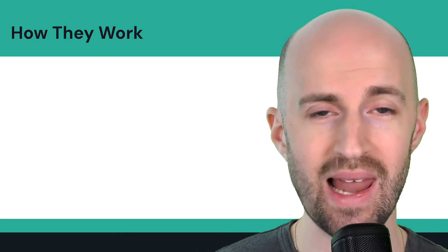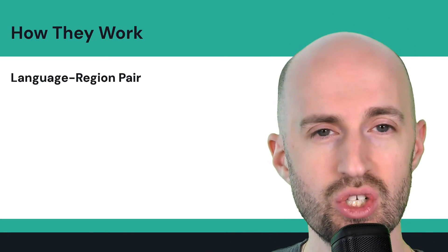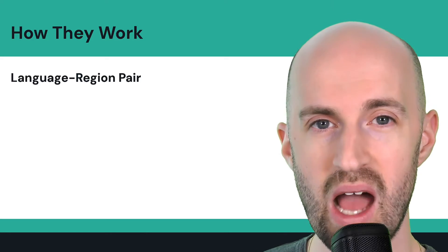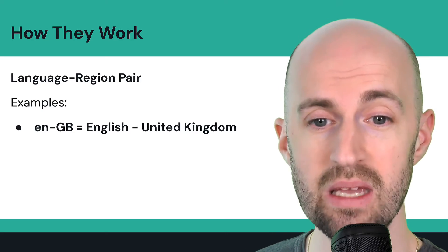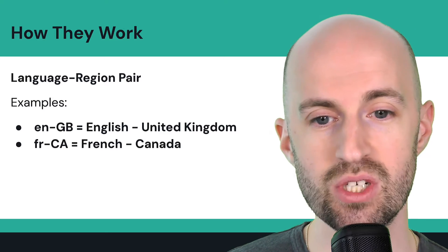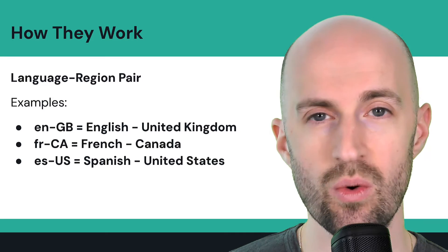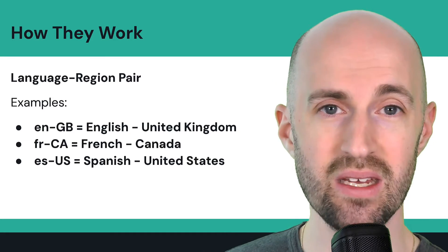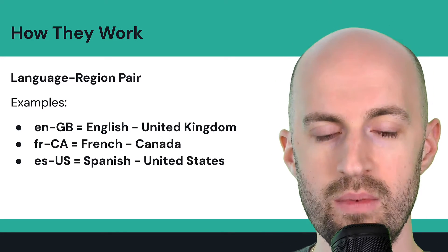So how do hreflangs actually work? You have a language-region pair — I showed a code snippet earlier that highlighted how it looks. Here are a few examples: EN-GB for English UK, FR-CA for French Canada, and ES-US for Spanish in the United States. There are many others — you just need to look up the ISO codes.